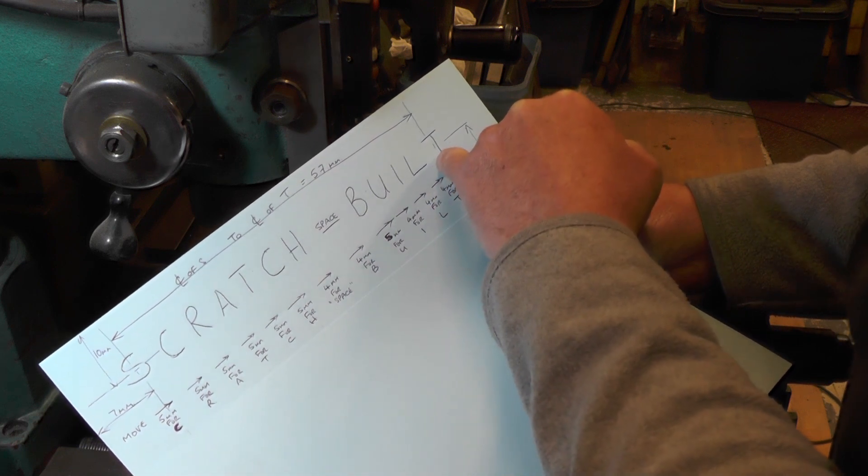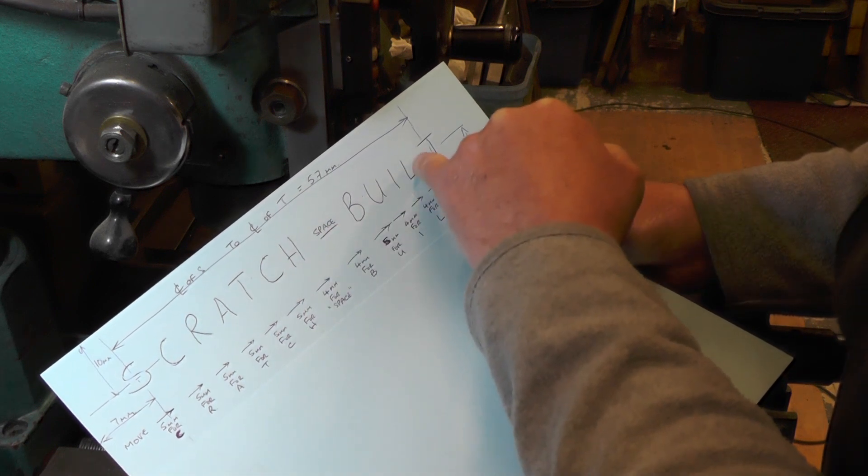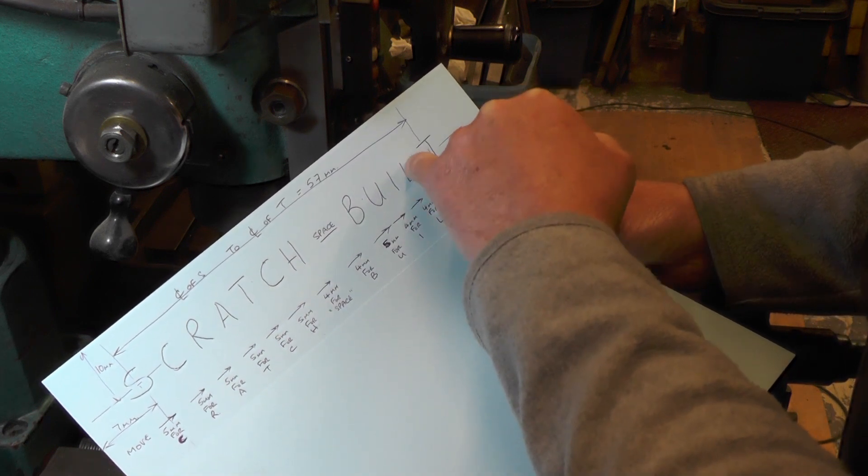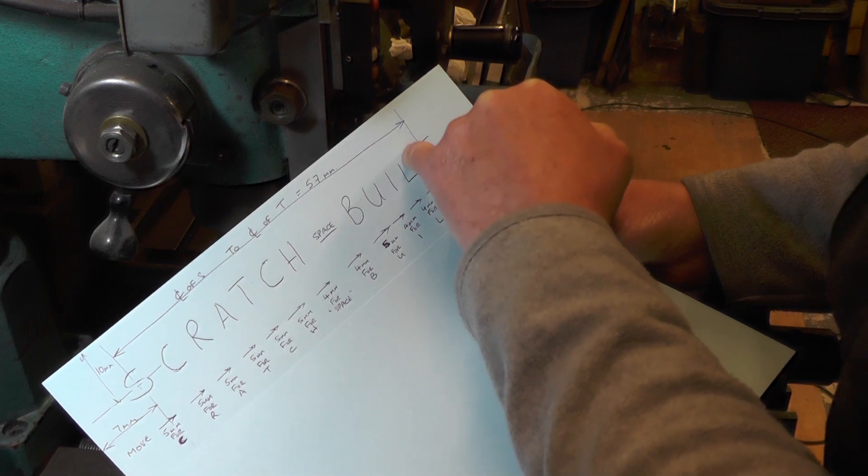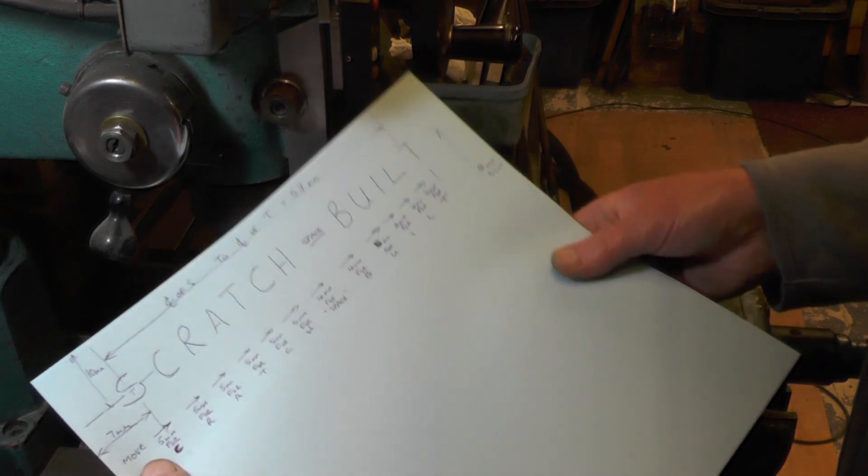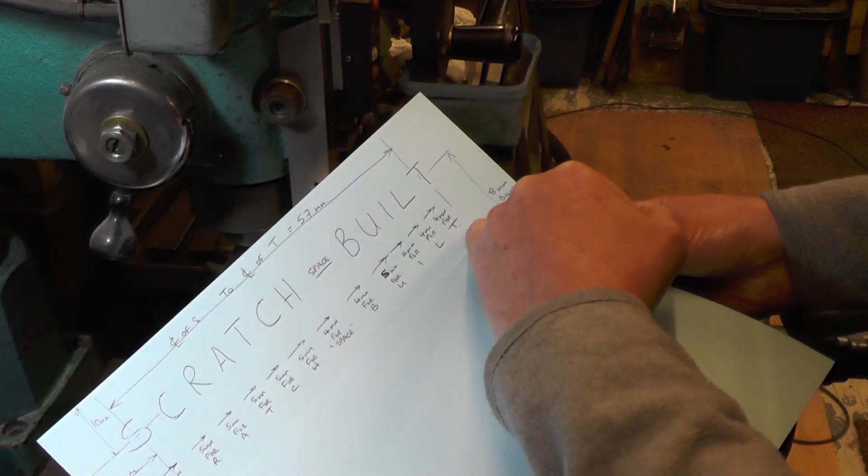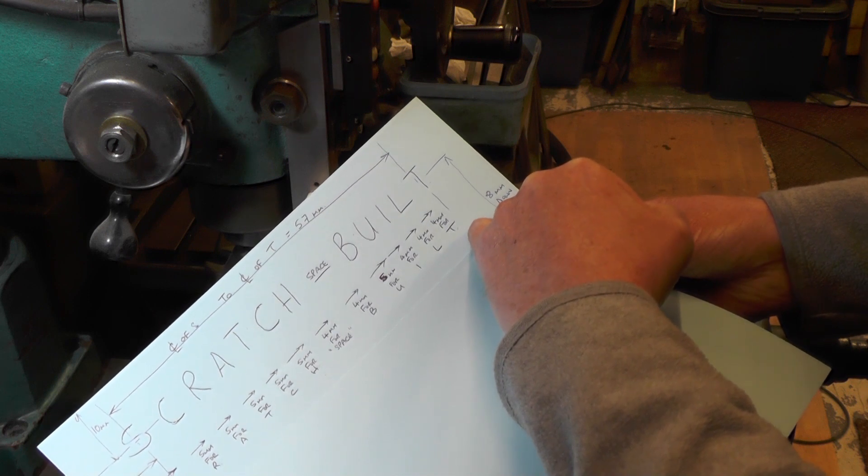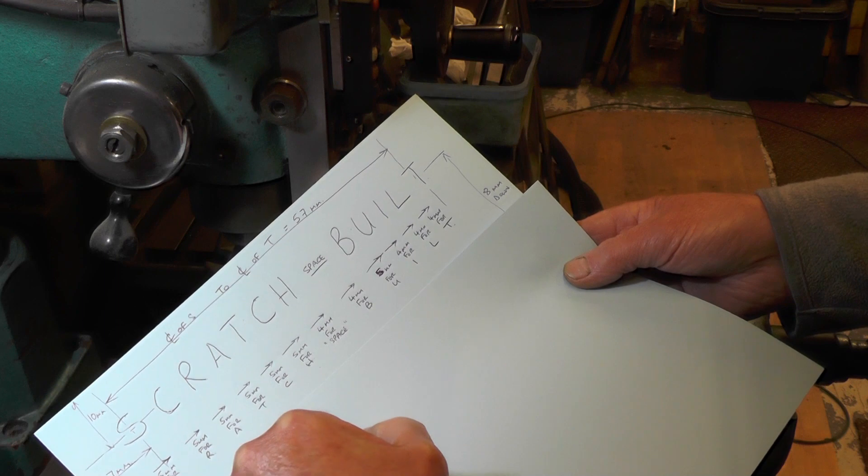Then 4mm away from the I to get the L. From the L to the T, it would normally be 5mm spacing, but I found out that an L and a T side by side don't quite look right at 5mm, so I do it at 4mm.